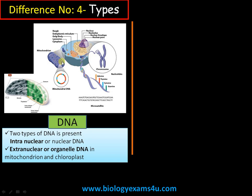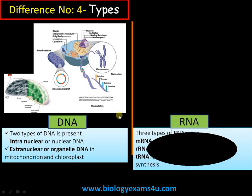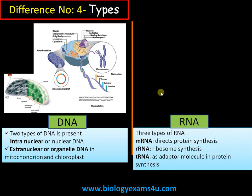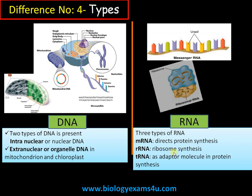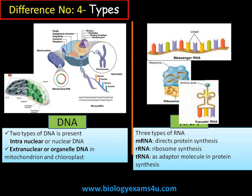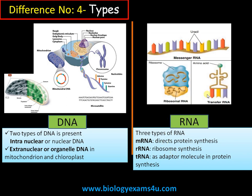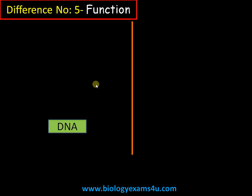These organelles are called semi-autonomous because majority of the proteins for these organelles are coded by nuclear genes; only some proteins are coded by mitochondrial and chloroplast genes. Whereas RNA has three types: mRNA, which directs protein synthesis and is involved in transcription; rRNA, which is the building block of ribosomes; and tRNA, which acts as an adapter molecule during protein synthesis or translation.